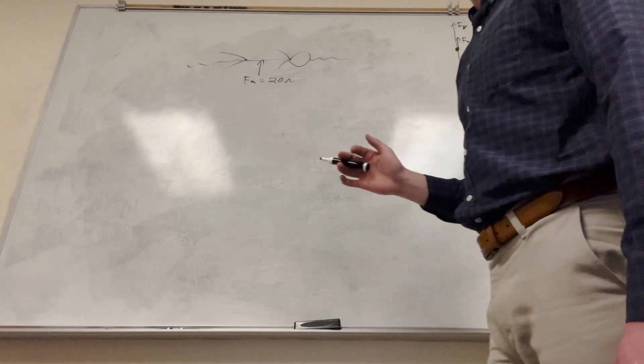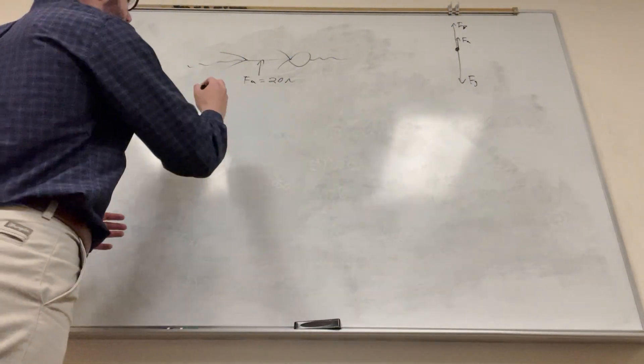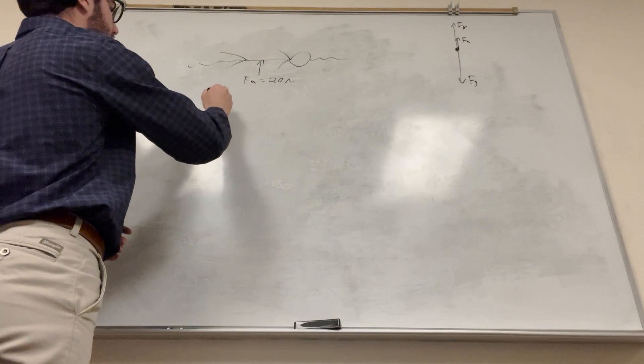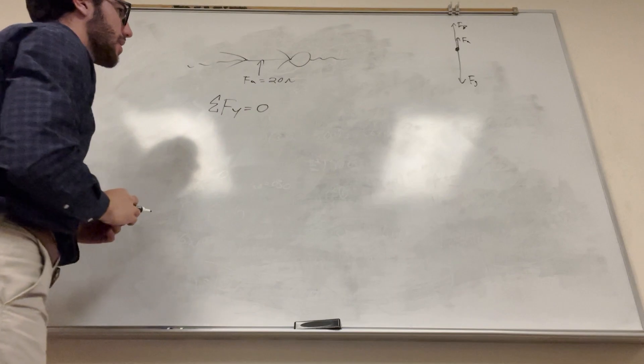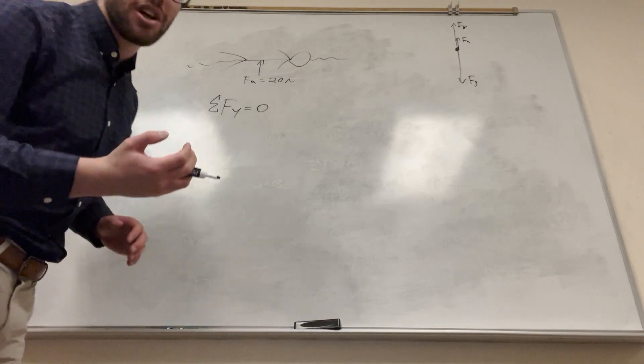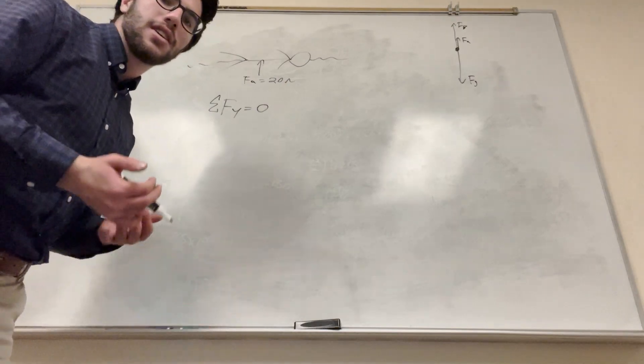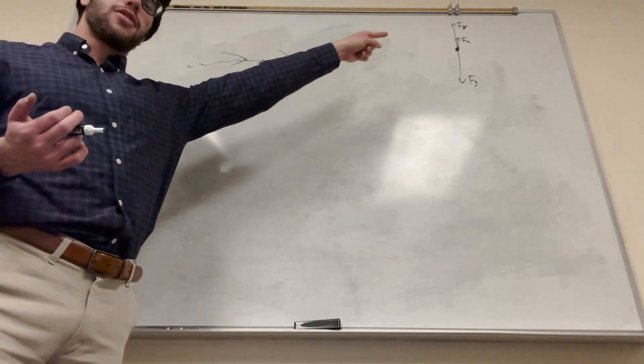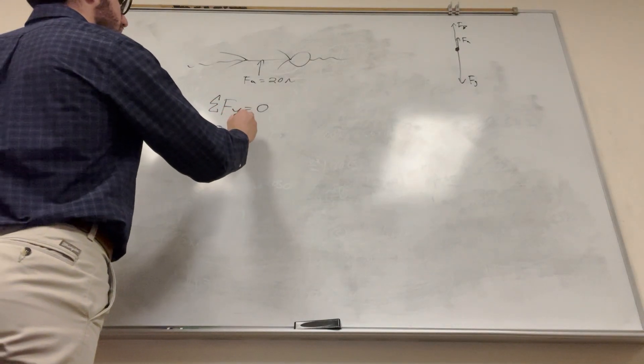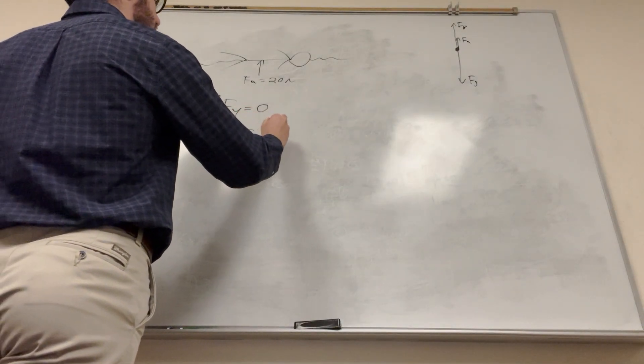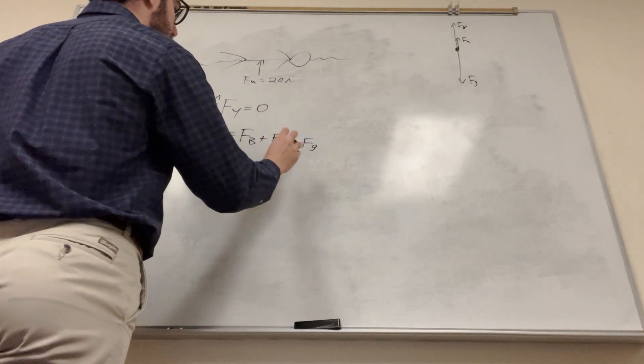Now we have this system is at equilibrium, right? He's not moving, or they're not moving at all. And if it's at equilibrium, we know that the sum of the forces in the y direction is equal to zero, right? If the sum of the forces were not equal to zero, they'd be accelerating upward, downward, you know. So we know that this is true. And those are all the forces acting. So basically, what we can say is that zero is equal to the force of buoyancy plus the force applied, but minus the force of gravity.